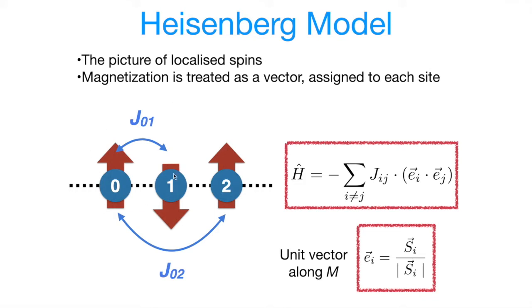It's a model of interacting localized spins. It assumes that the electrons around each magnetic atom are producing a localized magnetic moment, and then these moments are interacting via so-called exchange interaction, JIJ. In real material, interactions can be quite long-ranged, so you can have couplings between nearest neighbors, next nearest neighbors, etc.